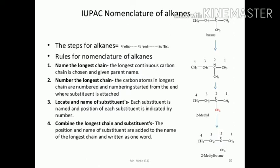Rule number two: number the longest chain. The carbon atoms in the longest chain are numbered, and numbering starts from the end where the substituent is attached — for example, position 2 where a methyl group is attached. Rule number three: locate and name the substituents.